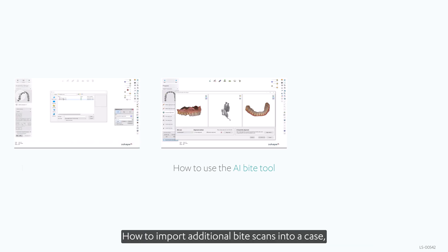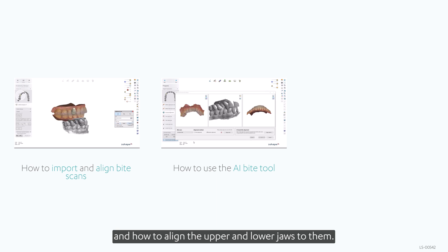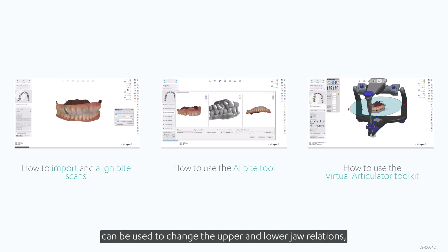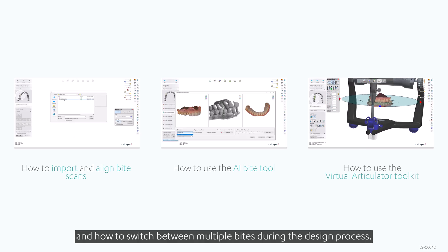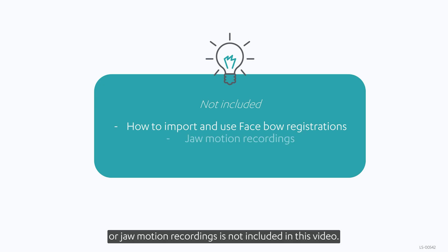How to import additional byte scans into a case and how to align the upper and lower jaws to them, how the broader virtual articulator toolkit and settings can be used to change the upper and lower jaw relations, and how to switch between multiple bytes during the design process. How to import and use Faithbo registrations or jaw motion recordings is not included in this video.